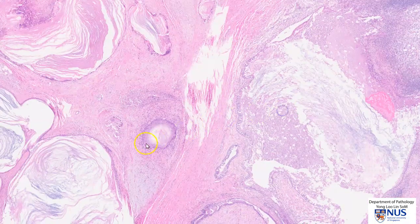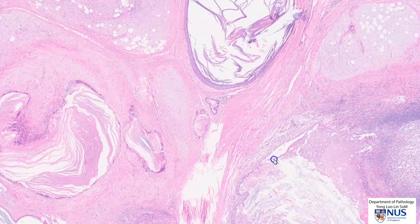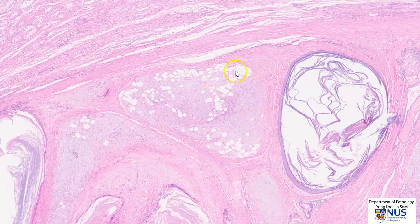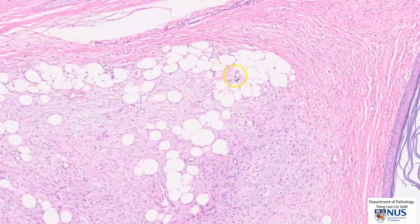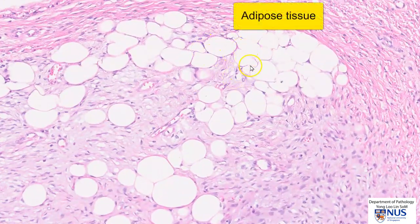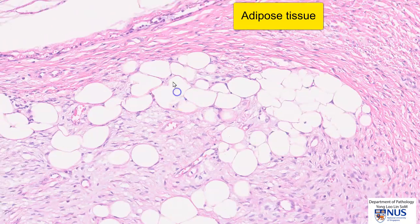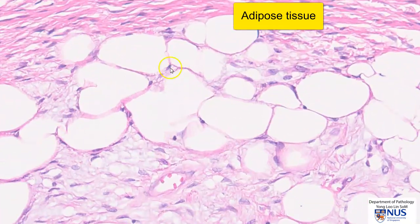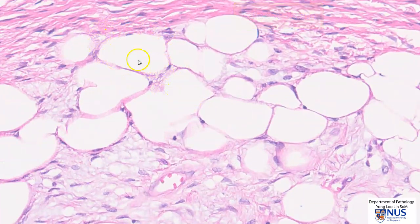The stratified squamous epithelium is derived from ectoderm. Moving on to yet another area here, we can see that there is adipose tissue here. These are the adipocytes, which usually appear very empty with extremely compressed small nuclei, and this is derived from mesoderm.